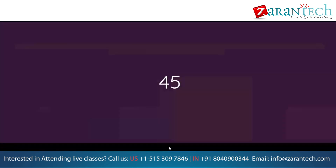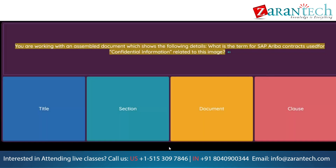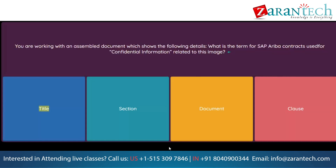Question: You are working with an assembled document. What is the term SAP Ariba Contracts uses for confidential information related to this image? Option 1: Title. Option 2: Section. Option 3: Document. Option 4: Clause.